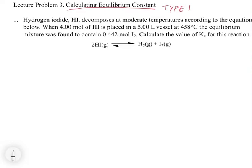Here's the big tell for type 1: it's going to ask you to calculate the value of Kc. When you get a type 1 problem, the setup is going to be 'calculate the value of Kc.' You know you're going to be given all the information you need to calculate the equilibrium values. Step 1 for all of these problems is always to write out the K equation.